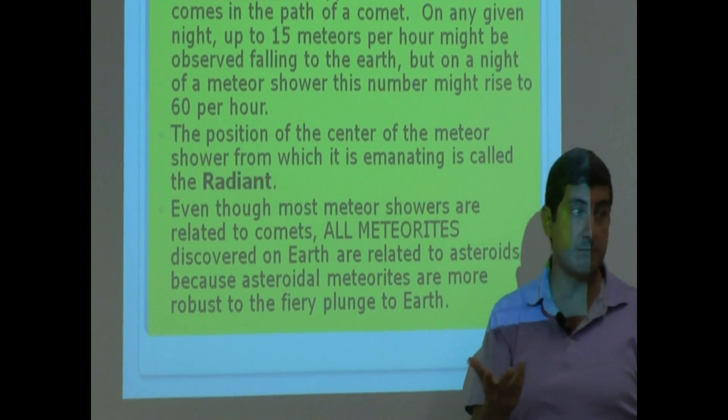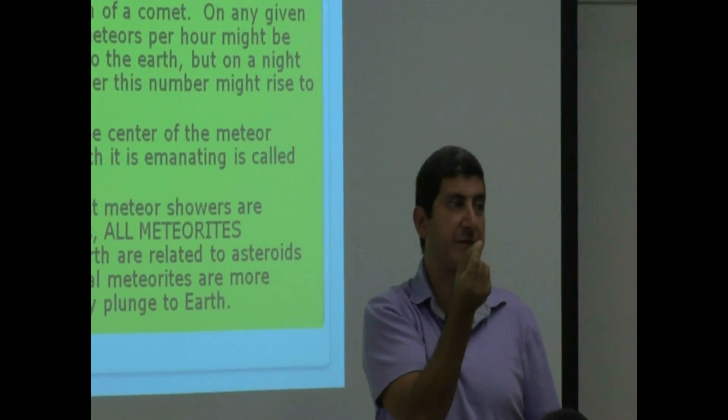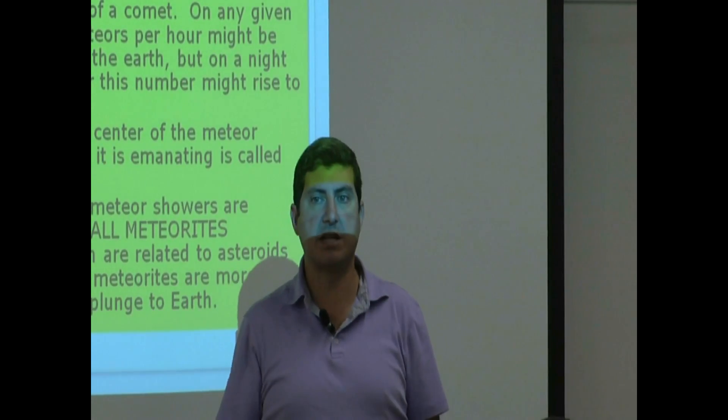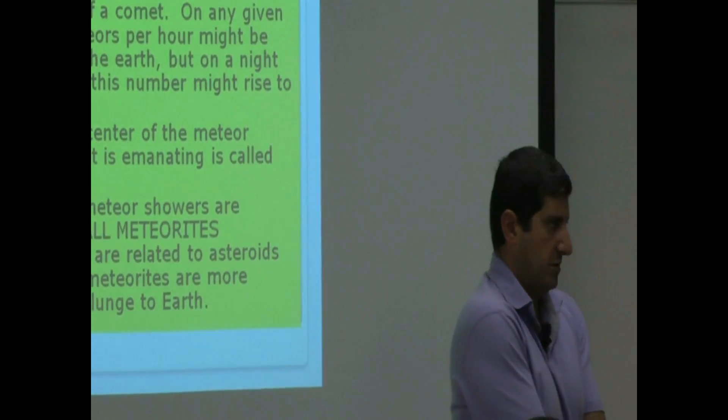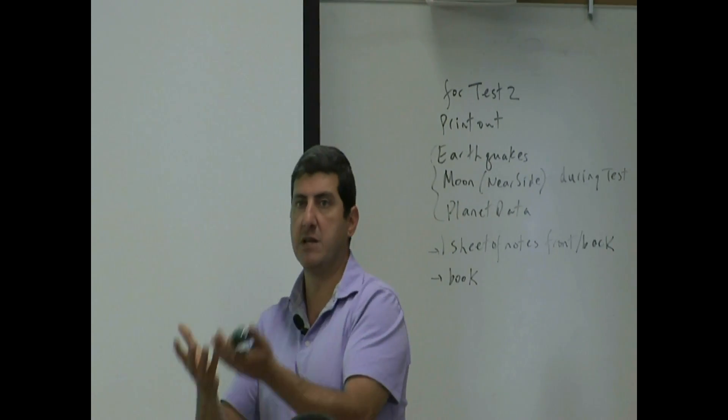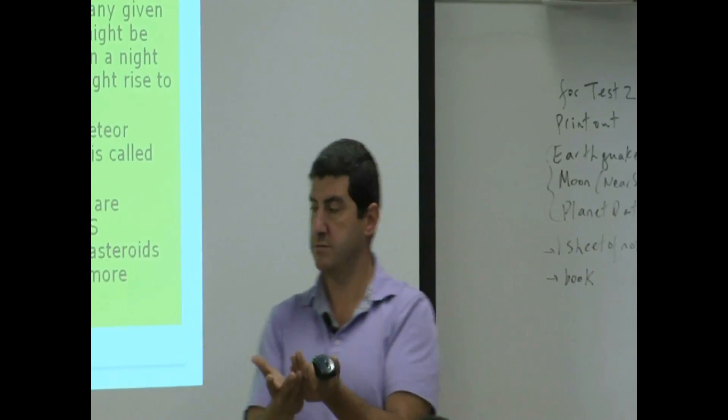But what's going to happen, usually the meteor shower is going to be made up of small, tiny fragment materials. Because the meteor shower is going to burn up in the air. You're not going to discover anything on the Earth. If you discover a meteorite on the surface of the Earth, you pick it up, that usually came from an asteroid, not a comet.